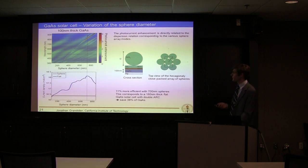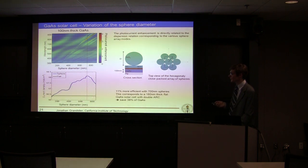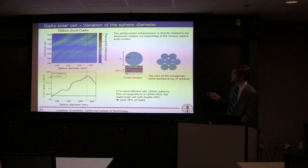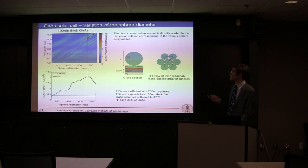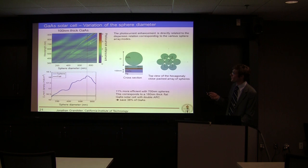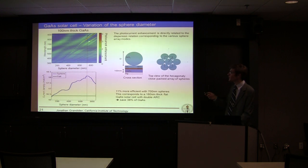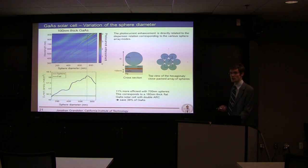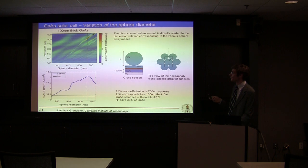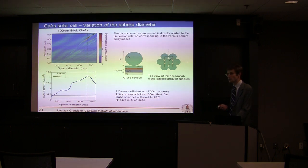I did a parametric analysis to see what was the optimized size of sphere, and this was indeed 700 nanometers. On this map, we have these resonant peaks which correspond to the band structure of the photonic crystal. The reason why the enhancement is highest at 700 nanometers is because we have a combination of peaks that is more beneficial to the solar cell in the red part of the spectrum. So 700 nanometers is the optimal value for this configuration of a 100-nanometer gallium arsenide solar cell.